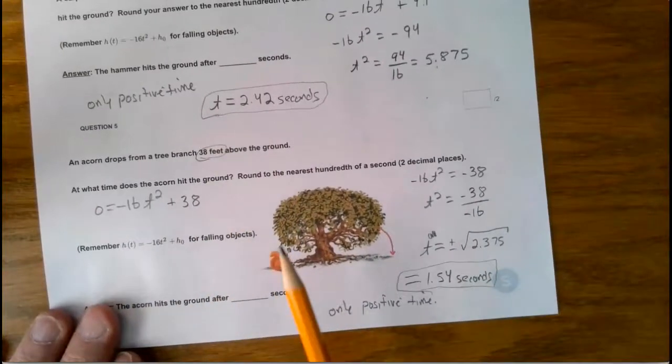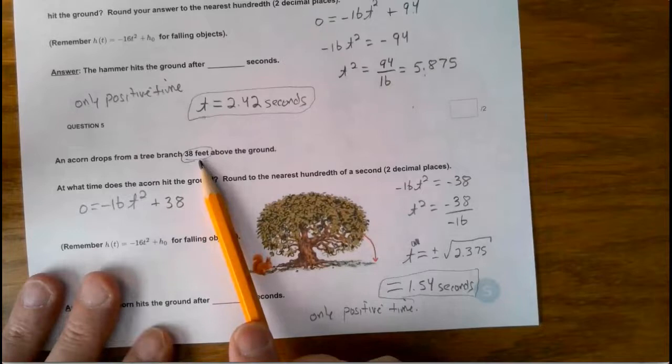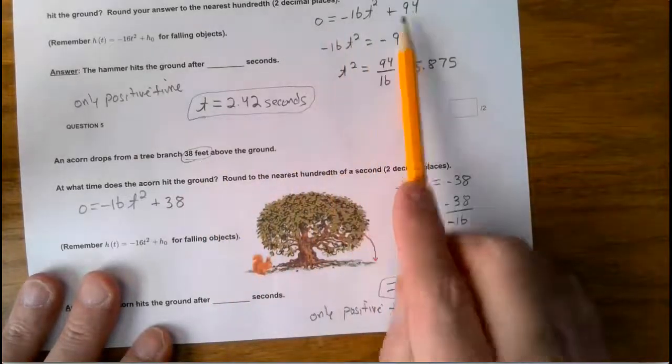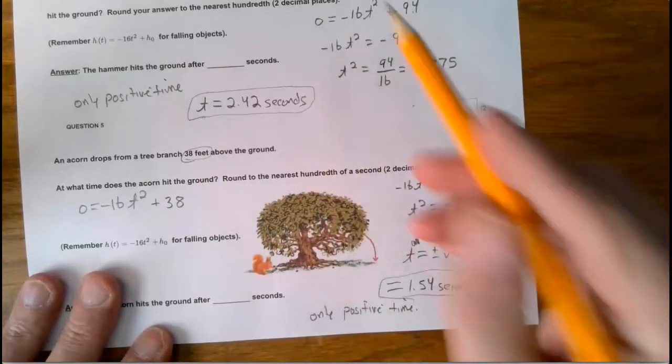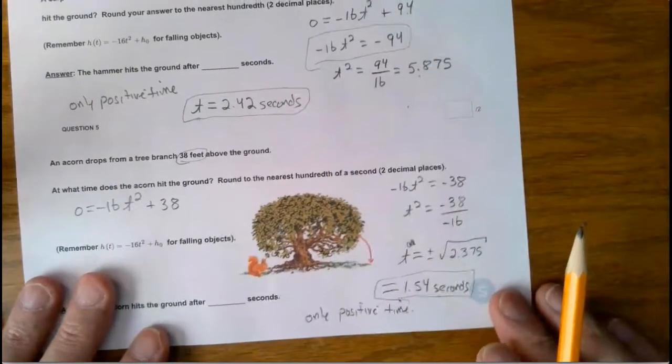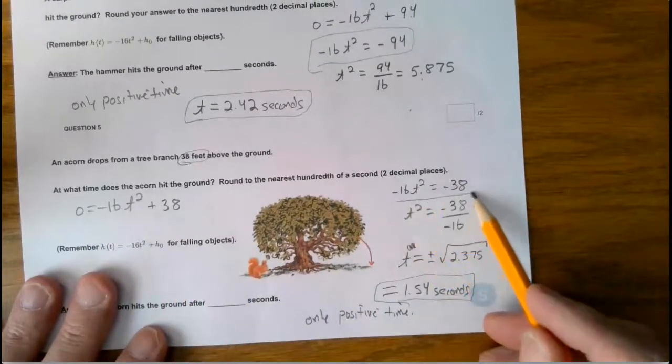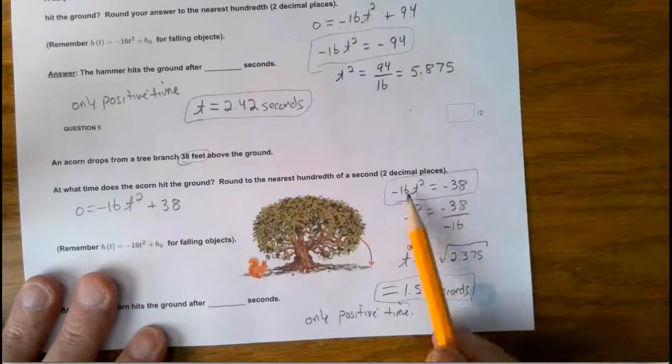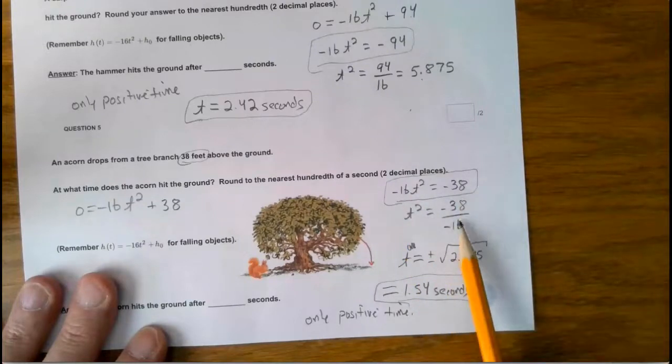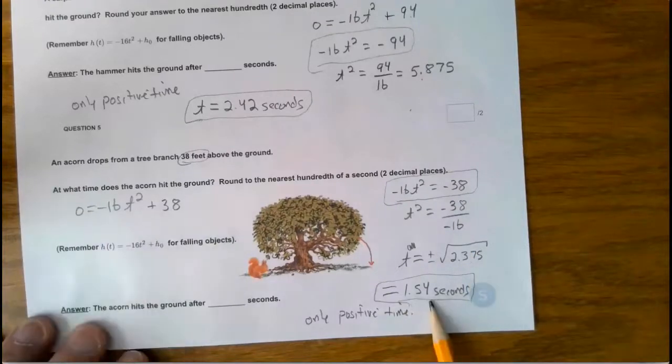The next one again, same problem. This one just changes to 38 feet. It's the same setup. So when you move it over, it looks like that. This is kind of what the setup will look like. So this is the initial problem, but the setup kind of looks like that. There's two negatives, so when you divide out, you get a positive number. Take the square root of both sides, and I got about a second and a half, 1.54.